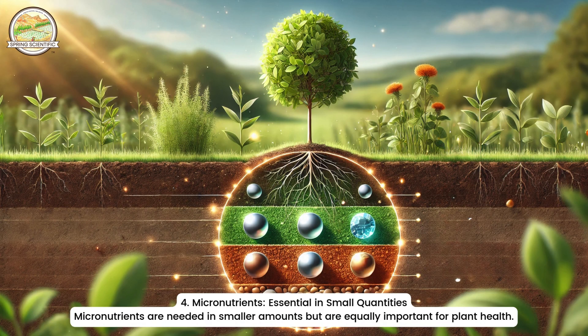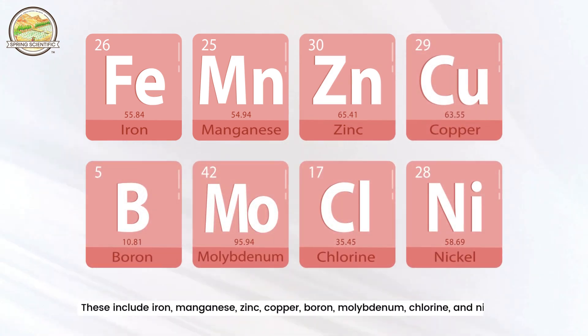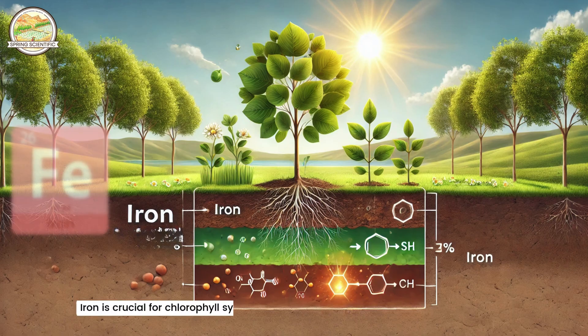Micronutrients are needed in smaller amounts, but are equally important for plant health. These include iron, manganese, zinc, copper, boron, molybdenum, chlorine, and nickel.